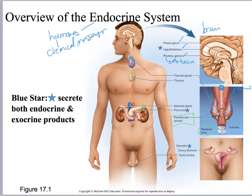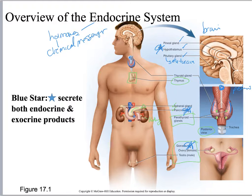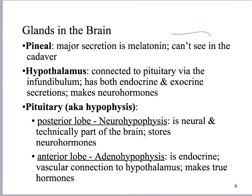Going down to the abdominal cavity: the adrenals sit right on top of your kidneys. You can also see the pancreas, which we discussed with the digestive system. Don't forget the thymus — tap your sternum, and right underneath it is this little gland. Then you have the gonads. The ones with blue stars are both endocrine and exocrine — they secrete hormones but also secrete other things.